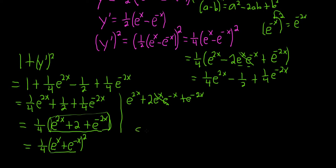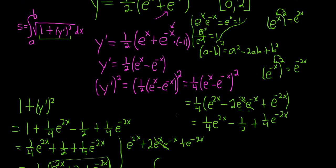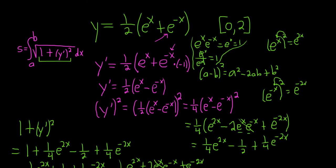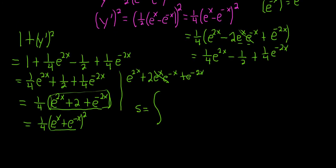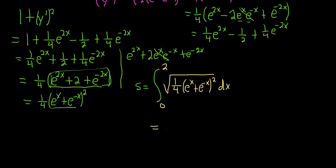Now we can find s. The definite integral runs from 0 to 2, as given in the problem. So s equals the integral from 0 to 2 of the square root of 1/4 times (e^x plus e^{-x})^2, dx. Taking the square root of 1/4 gives 1/2, and the square root of the squared term is just (e^x plus e^{-x}). So s equals the integral from 0 to 2 of 1/2 times (e^x plus e^{-x}), dx.